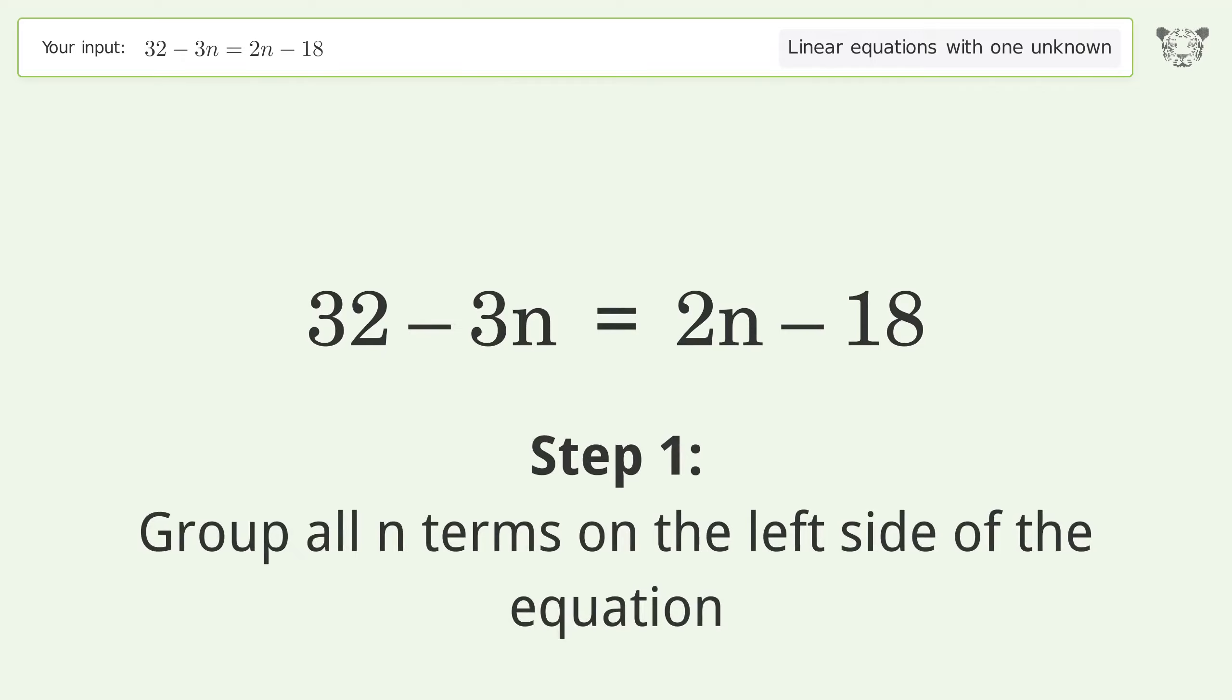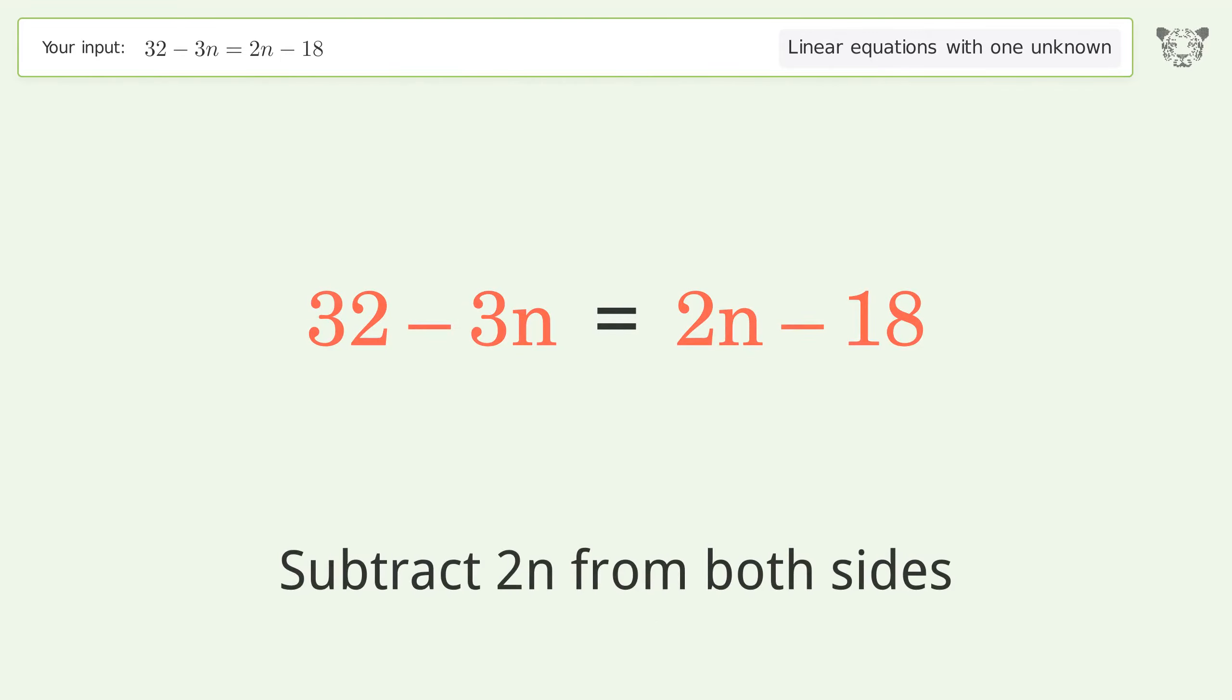Group all n terms on the left side of the equation. Subtract 2n from both sides.